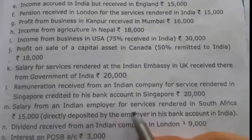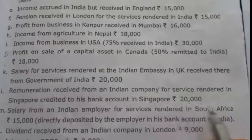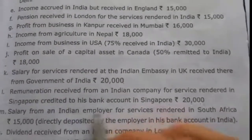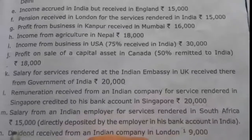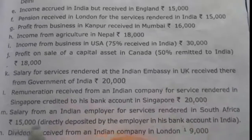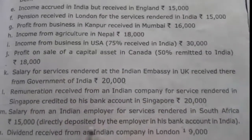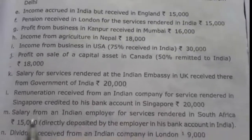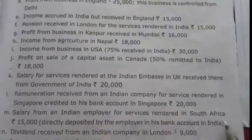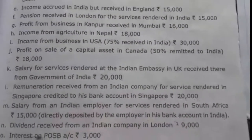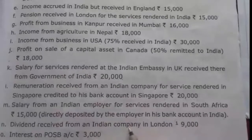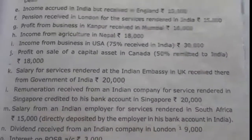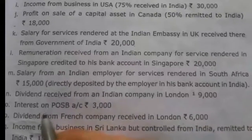Thirteenth, salary from an Indian employer for services rendered in South Africa Rs. 15,000, directly deposited by the employer into his bank account in India. Since it is deposited in India, Rs. 15,000 is taxable in all three columns. Fourteenth, dividend received from an Indian company in London Rs. 9,000 — dividend from an Indian company is exempt for all three cases.